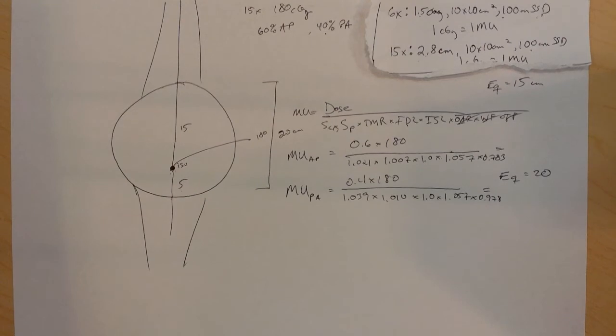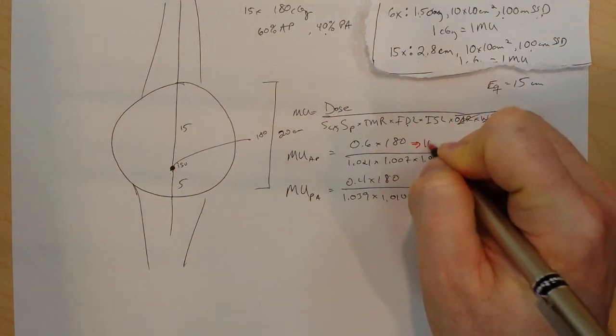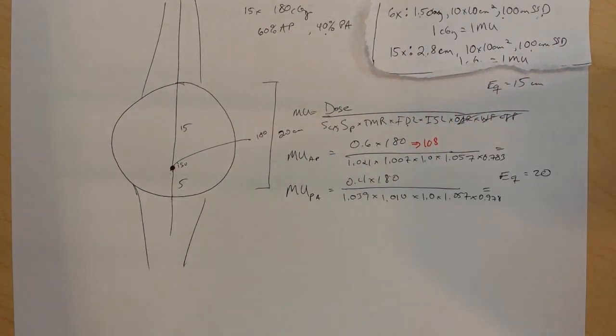Well, let's crunch the math. So 0.6 times 180 gives me 108. I take 108 divided by 1.021, divided by 1.007, divided by 1.057, divided by 0.783, and I get 127 monitor units.